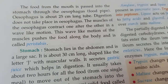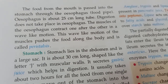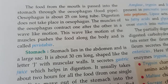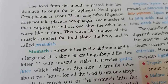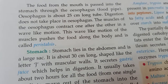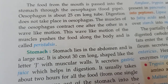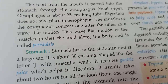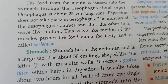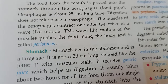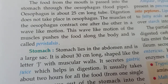Food from the mouth is passed into the stomach through the esophagus, also known as the food pipe. The esophagus is about 25 centimeters long, and digestion does not take place in the esophagus — it takes place in the stomach. The muscles of the esophagus contract one after another in a wave-like motion.